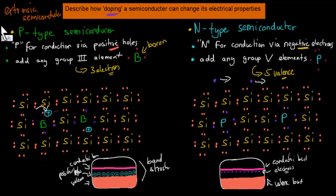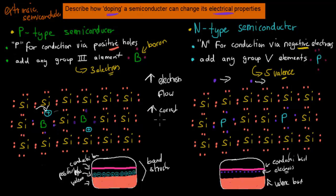To describe how doping a semiconductor can change its electrical properties: in the case of both p-type and n-type semiconductors, the electrical properties are changed because they increase the electron flow and thereby increase the current flow. The p-type does so by adding extra positive holes which allows more electrons to flow, and the n-type increases the amount of conduction electrons, which also leads to higher electron flow.